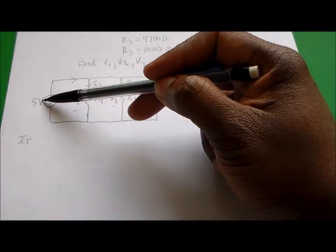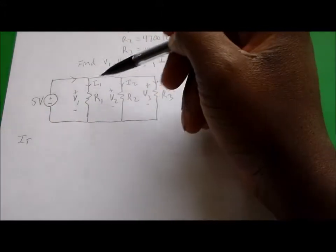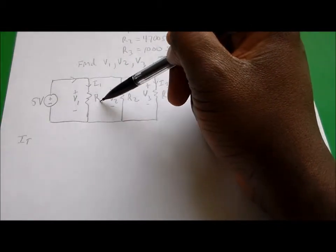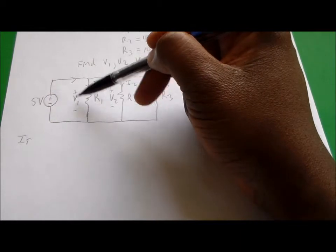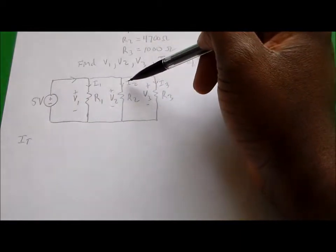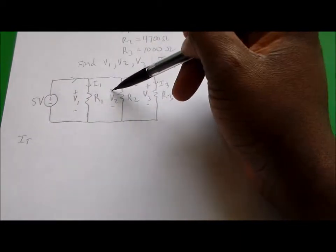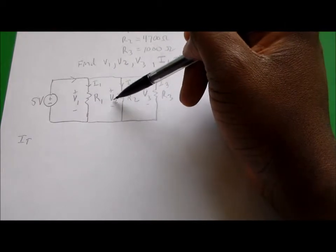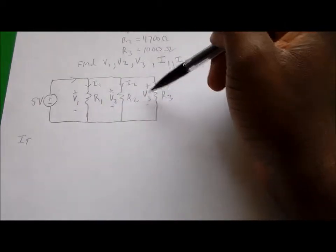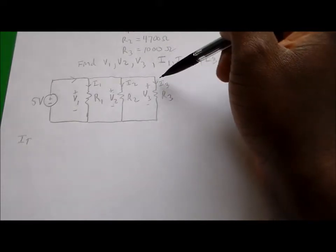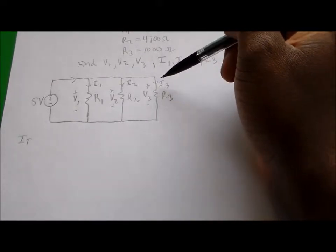In the circuit you have a 5 volt voltage source. The current flowing into resistor number 1 is called I1, and the voltage across that resistor is V1. You have the current flowing through resistor number 2 and the voltage across that is V2. We have V3 which is across resistor number 3 and the current flowing through that is I3.